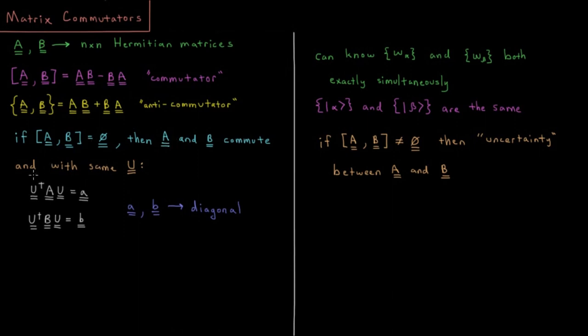And thus, with the same unitary matrix, so the same U, we have U dagger AU equals the diagonal matrix A, little a, and the same matrix U dagger BU, the same unitary transformation equals matrix little b.